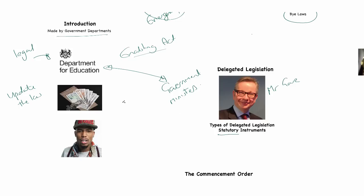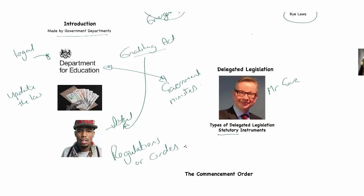Sometimes much wider powers are given. That changing of a fine is quite a simple statutory instrument — it will be small with a limited power. There may frequently be much wider powers, and that will be to fill in detail. Statutory instruments are frequently used and given wider powers to fill in detail when it's much too complex to go into in the original act. So when the Enabling Act only contains the skeleton, wider powers are given to the department to fill in the detail. They are often referred to as regulations or orders.